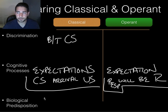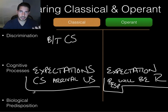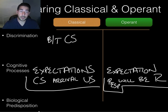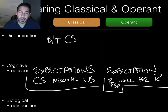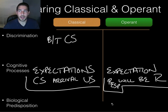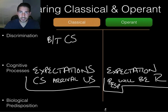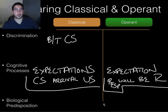Finally, biological predispositions. If an organism can naturally perform a response, it's going to be easier to pair those things. Dogs naturally salivate when they see food, so you can pair something with that salivation easily. But dogs don't naturally stand on their head, so you can't use classical conditioning for that — it's not a natural action. With operant conditioning, organisms learn best behaviors similar to their own natural behaviors. Unnatural behaviors instinctively drift back — we can teach Shamu to jump, but she'll eventually drift back to natural killer whale behavior without continual reinforcement.